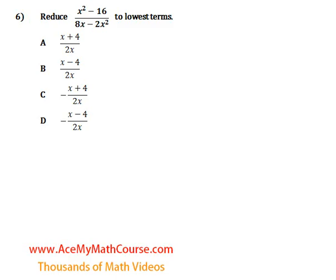Now let's continue with question number 6. Reduce x squared minus 16 over 8x minus 2x squared to lowest terms.